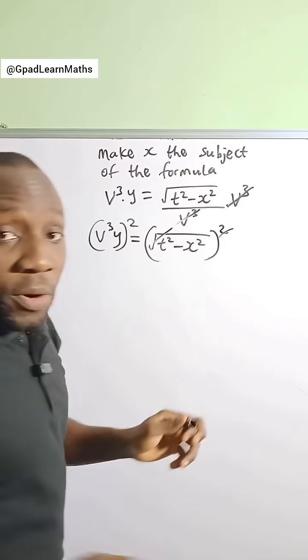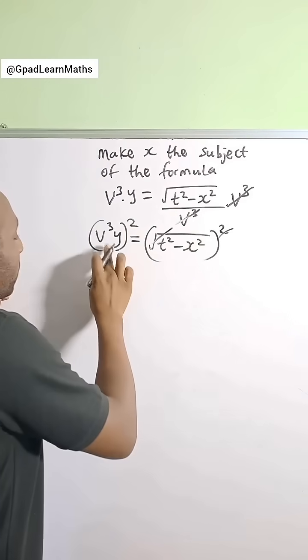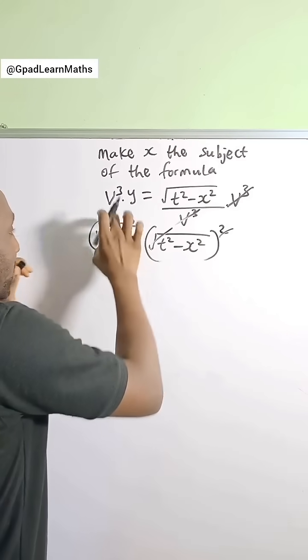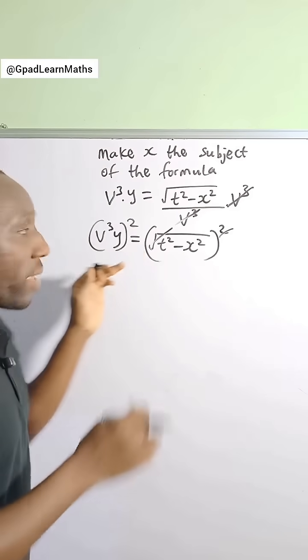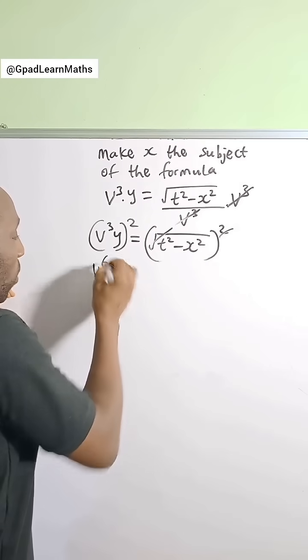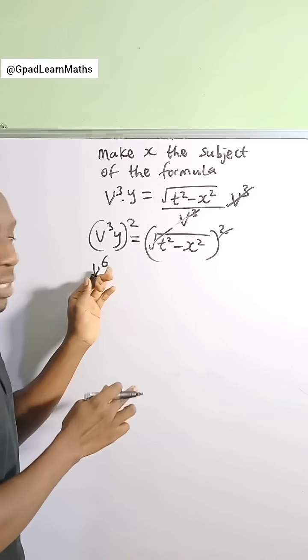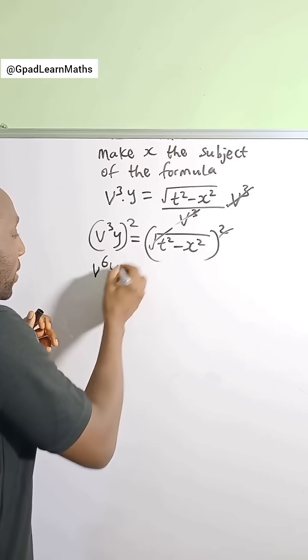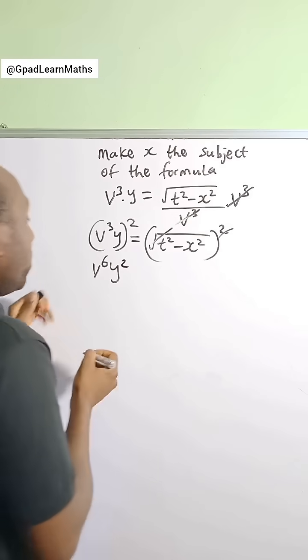This square will cancel the square root and that leaves you with v cubed y all squared. So let's apply the square on v³y. The squared on v cubed is going to give you v raised to power 6 because 3 times 2 is 6, and also y squared. This is equal to t squared minus x squared.